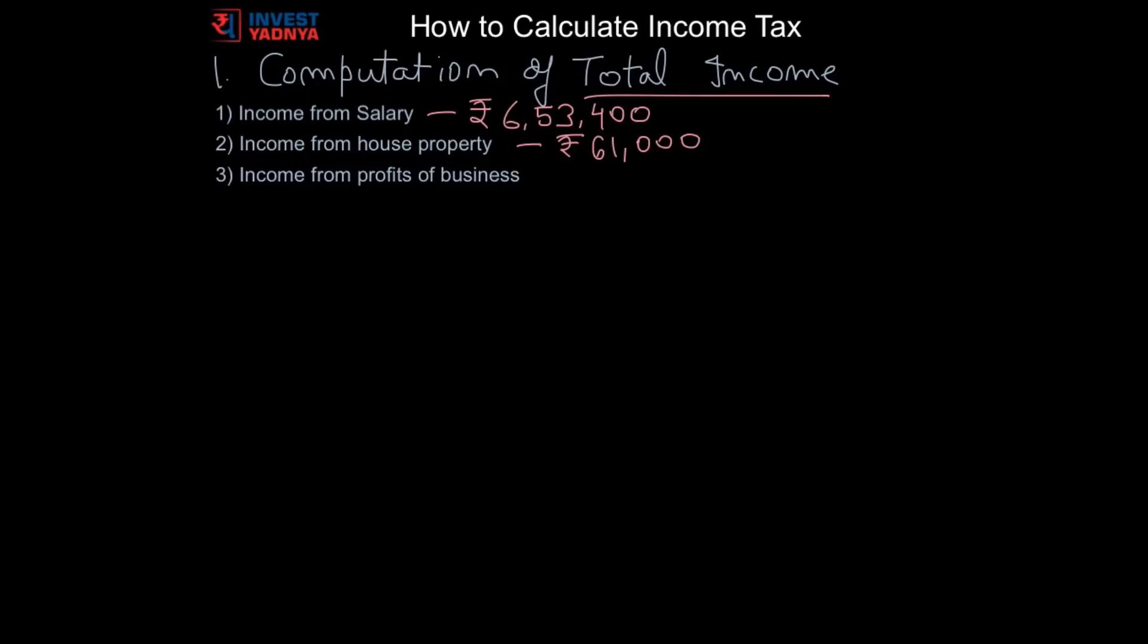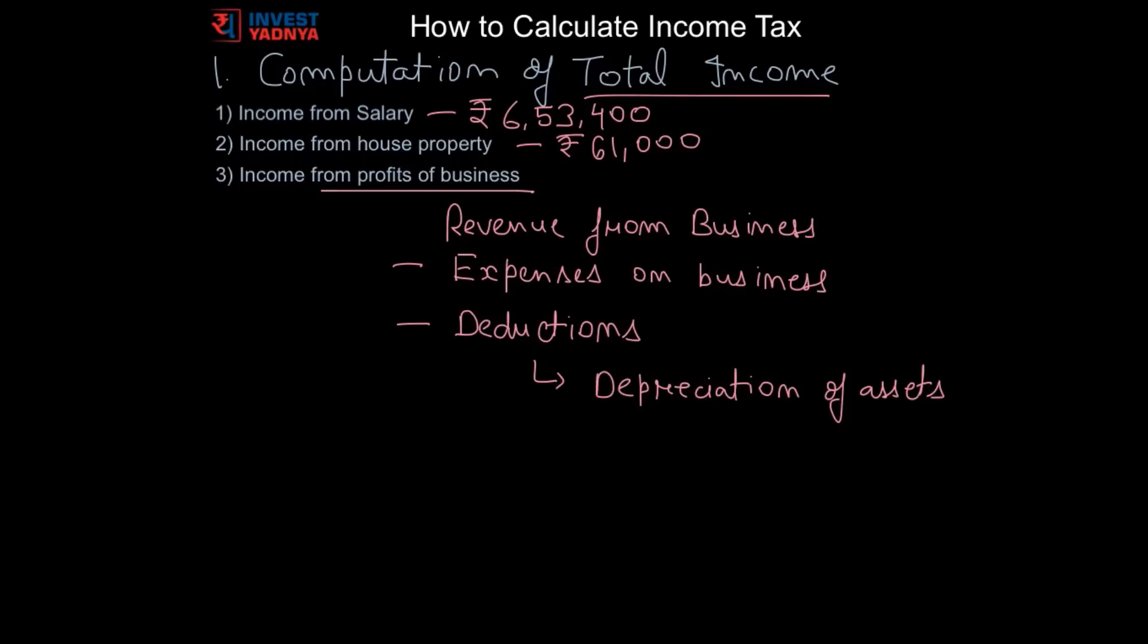Next is income earned through your profession or business, charged under the head profits and gains of business or profession. The income chargeable is the difference between the revenue received on running the business and expenses incurred. The deductions allowed are depreciation of assets used for business, rent for premises, insurance and repairs for machinery and furniture, advertisements, traveling and many more. Here we are assuming Sunil doesn't have any income under this head.